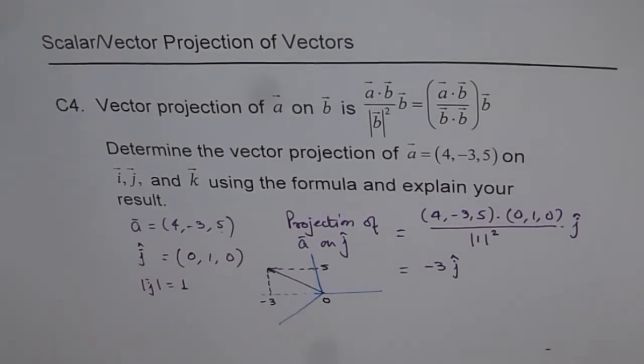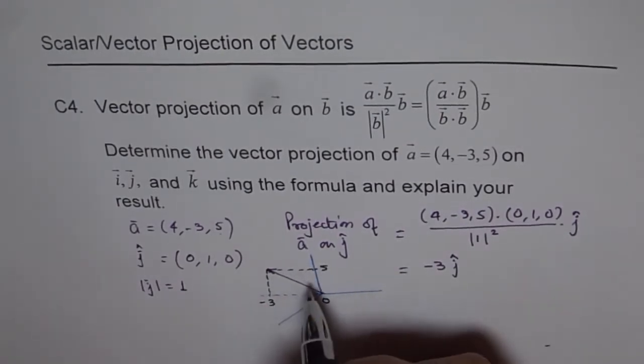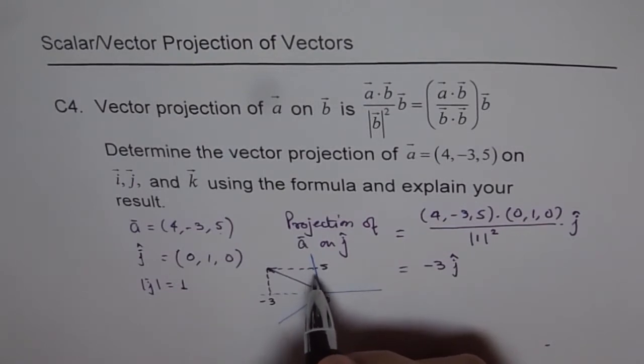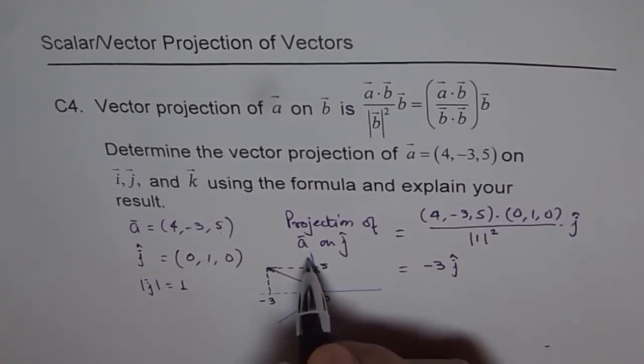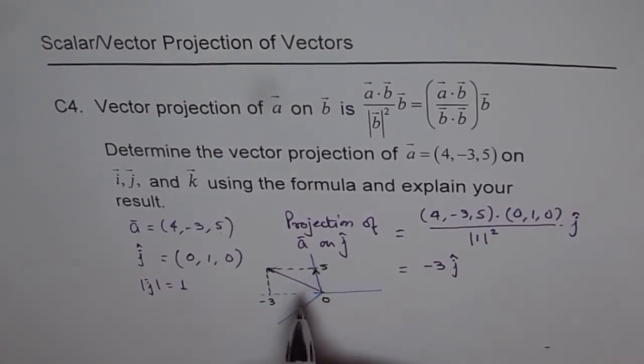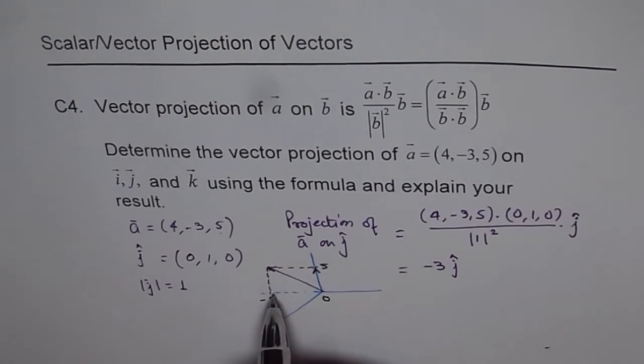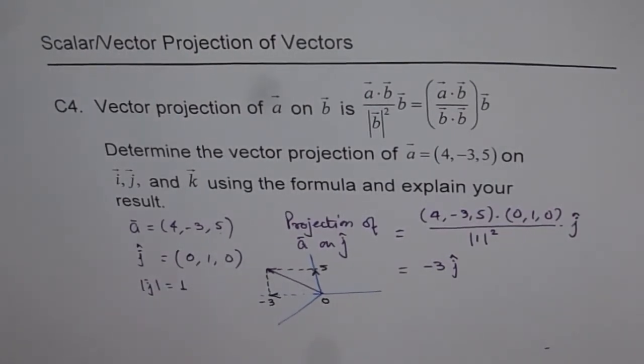So, vector projection is the projection on that axis, and the direction will be the direction of the axis itself. So this vector here will have that direction along k, and here it is along minus j. Do you see that? So that is how you can explain it.